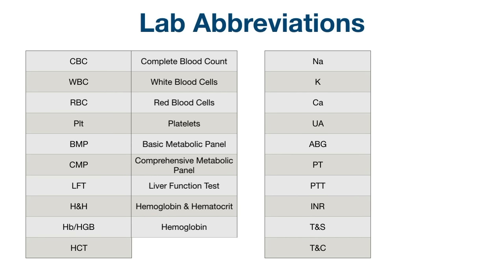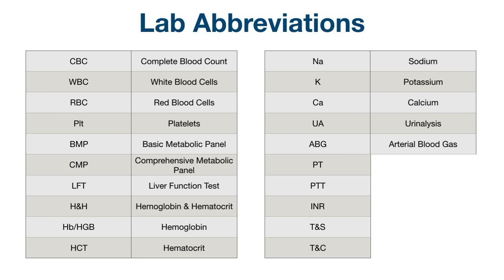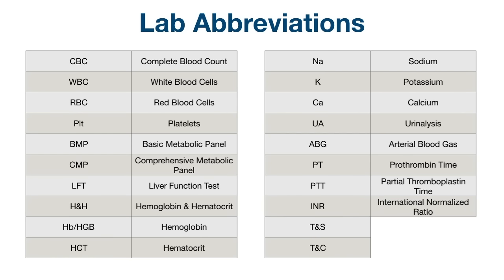HB or HGB: hemoglobin. HCT: hematocrit. NA: sodium. K: potassium. CA: calcium. UA: urinalysis. ABG: arterial blood gas. PT: prothrombin time. PTT: partial thromboplastin time. INR: international normalized ratio. TNS: type and screen. TNC: type and cross.